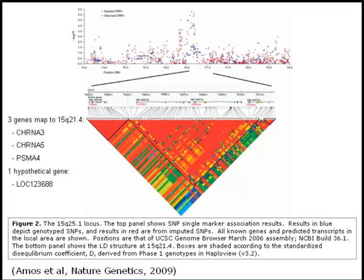This next slide — Figure 2 from their manuscript — depicts this region on chromosome 15. The top panel is a blown-up image of that Manhattan plot showing individual SNP lung cancer association p-values within about a half megabase region. The bottom panel shows the genes found within this particular region. They were able to identify at least three known genes and one hypothetical gene. This gives us a sense of the kind of information we're gleaning from genome-wide association studies.